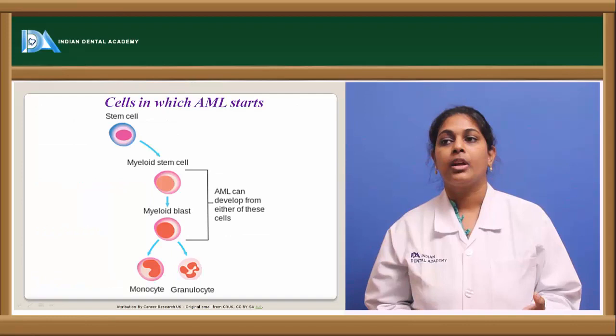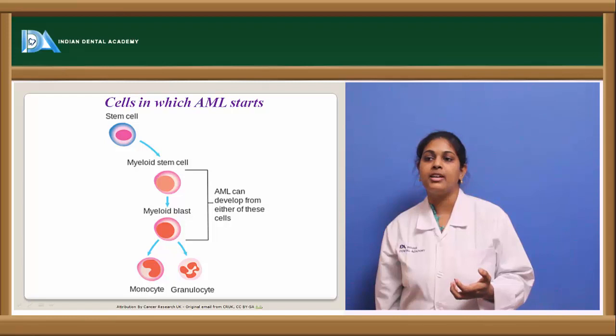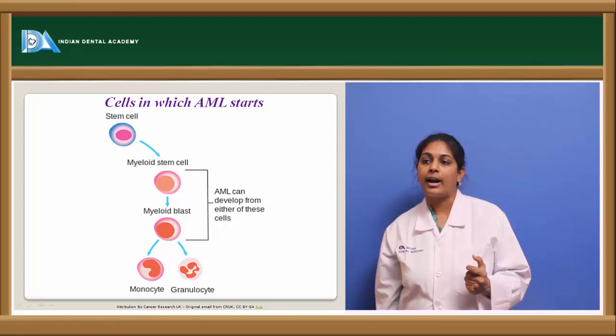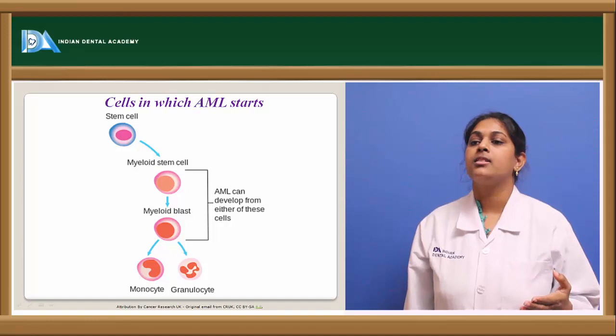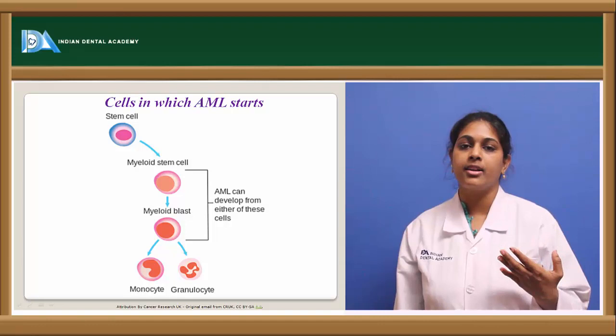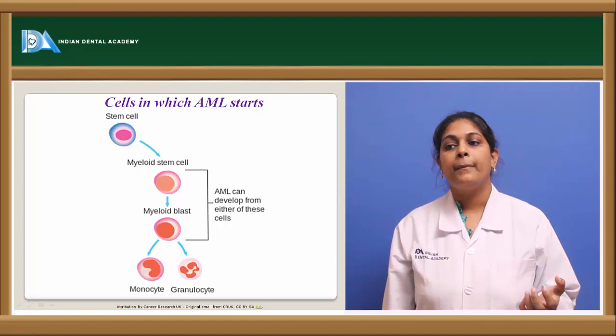In AML, the stem cell in the bone marrow which usually differentiates into a myeloid stem cell is supposed to become a myeloid blast, but due to lack of maturation, this is blocked, resulting in AML. This acute myeloid leukemia may then result in the formation of immature monocytes and granulocytes.